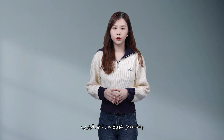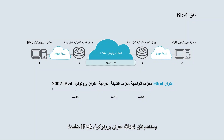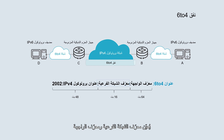Differing from a manual tunnel, a 6to4 tunnel is not configured in pairs. A 6to4 tunnel uses a special IPv6 address, which consists of a fixed IPv6 address prefix, an IPv4 address, a subnet ID, and an interface ID. The IPv4 address is a globally unique one applied by an IPv6 island. The subnet ID and interface ID are allocated by users in the IPv6 island.